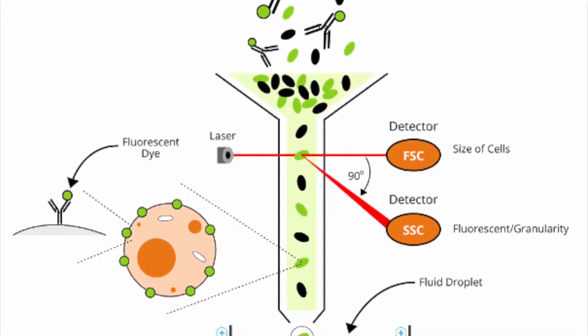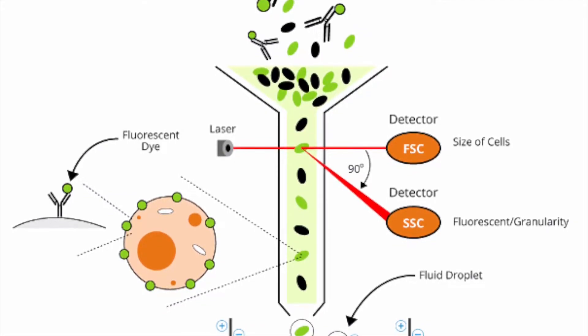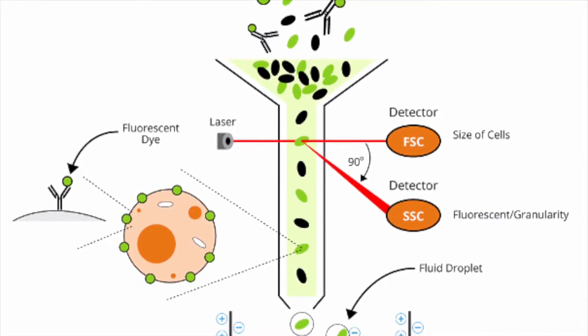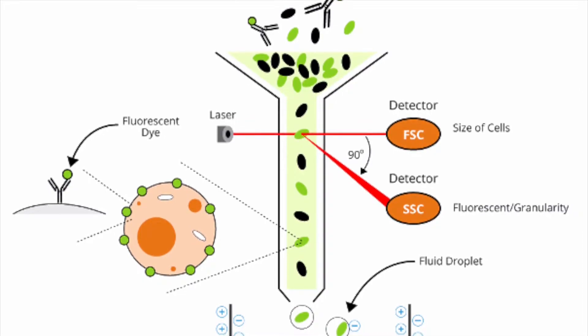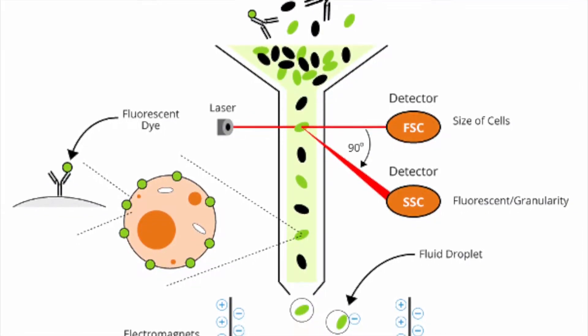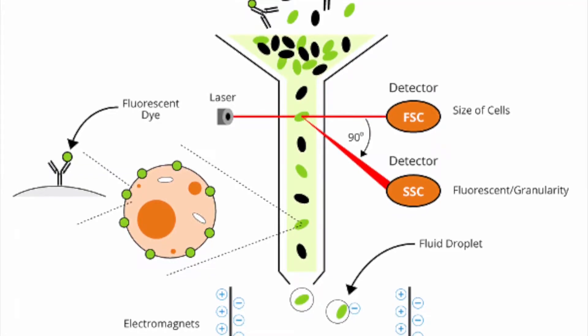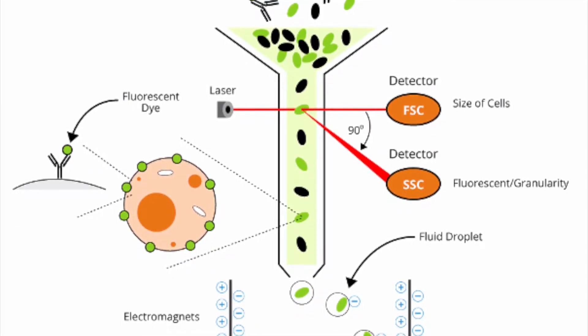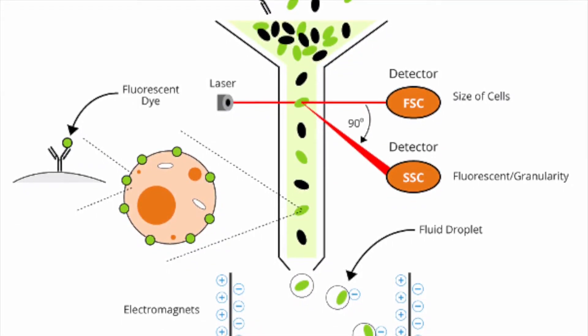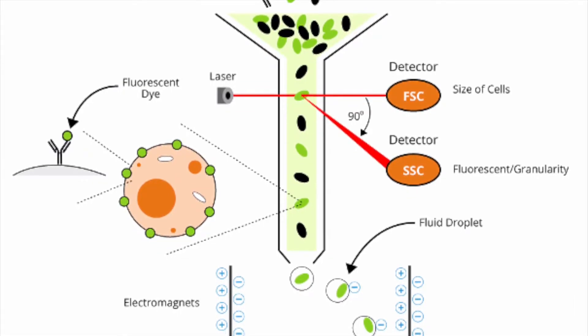Here we could see after cells are being labeled by the fluorescent antibody, they are being interrogated by the laser from the left side. This process of collecting data from samples is called acquisition.